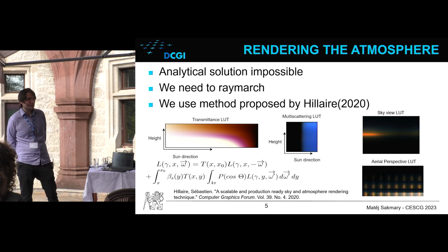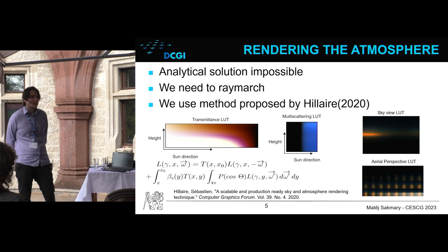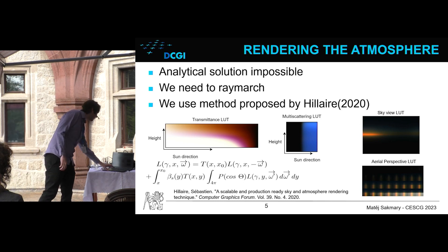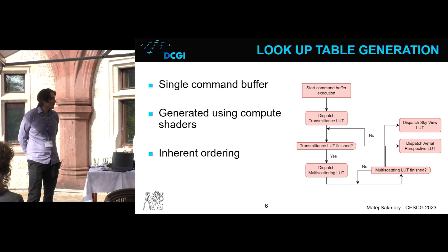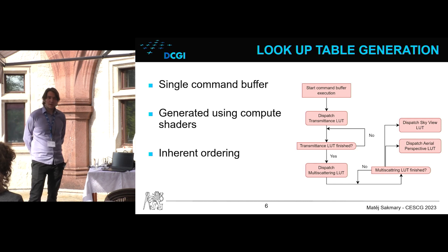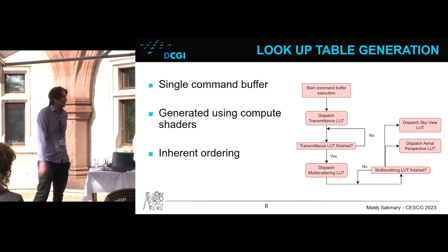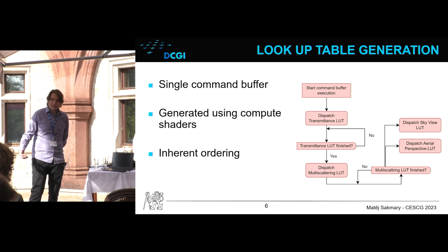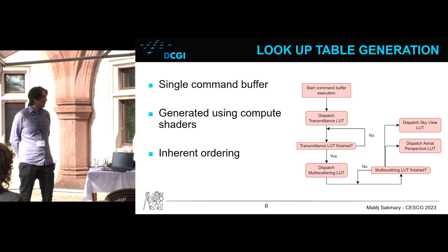Last, we pre-calculate the aerial perspective lookup table — a volumetric lookup table with slices very similar to the sky view lookup table. The slices are fitted to the camera frustum, and this texture is later used to render the atmospheric effects. To generate the lookup tables, we submit a single command buffer each frame using compute shaders. There is inherent ordering between the lookup tables: transmittance is needed for multiscattering, and both are needed for the sky view and aerial perspective. So we insert two GPU-to-GPU synchronization points into our command buffer to ensure correct ordering.